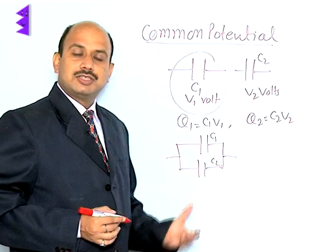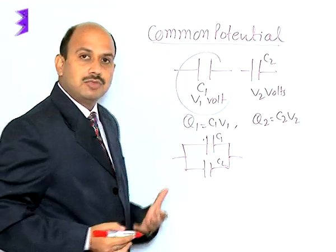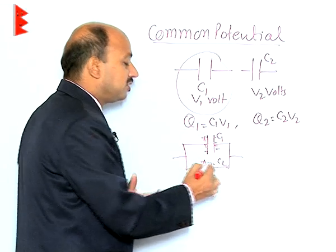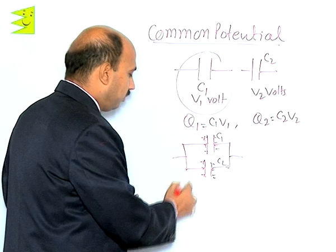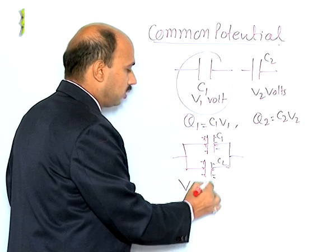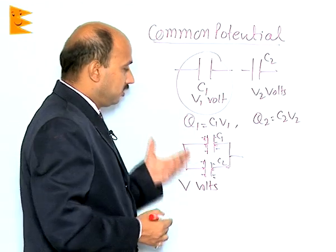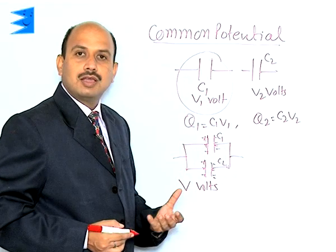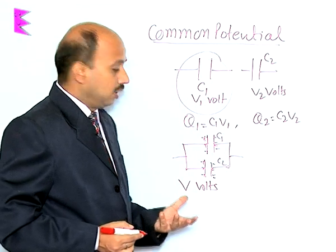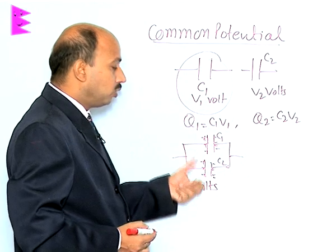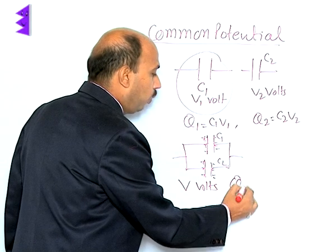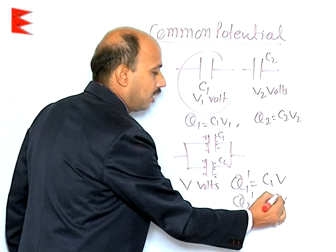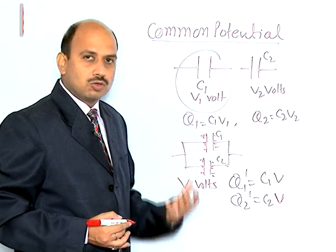When the two capacitors are connected, they share their charges until the potential of both positive plates becomes equal — that is, they attain a common potential V volts. After connection, the charges on the capacitors become q₁' = C₁V and q₂' = C₂V. Conservation of charge takes place — there is no loss of charge.